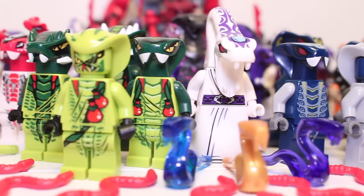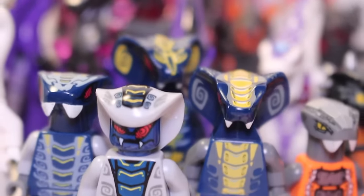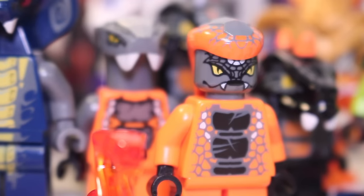These cunning snakes made their debut in 2012 as Lloyd Garmadon unleashed the five tribes upon the world of Ninjago, with the Hypnobrai, Fangpire, Venomari, Constrictai and Anacondrai.